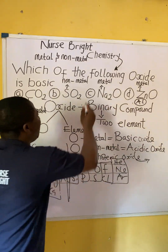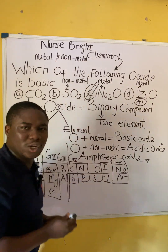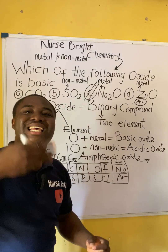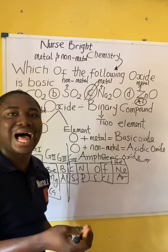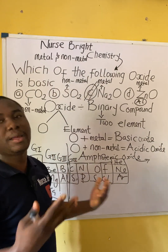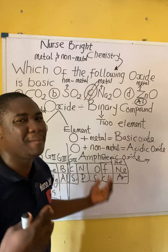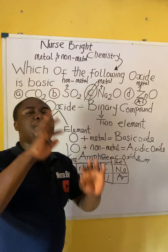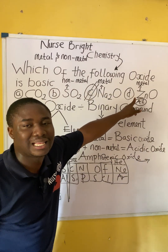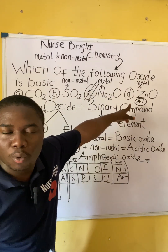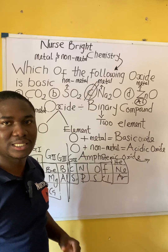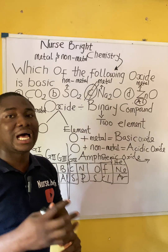So the answer to this question is option C. Option C contains a metal — sodium — that basically forms a basic oxide. Metals generally form basic oxides. Zinc and aluminium are not basic oxides; they are amphoteric oxides. Moving further, there are ways to actually confirm that a compound is a basic oxide.